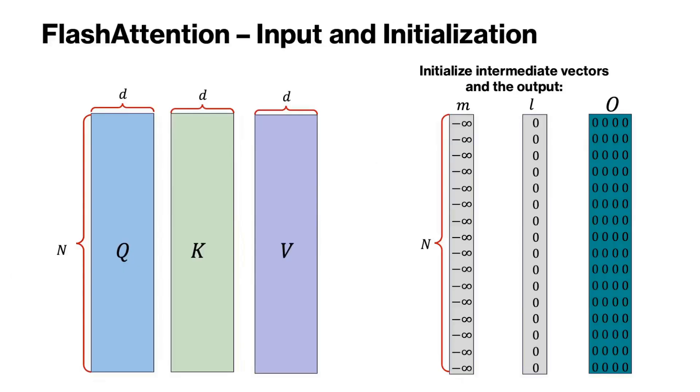With that theoretical reformulation of softmax, now we are ready for flash attention. Given input matrices Q, K, and V, flash attention first initializes two helper vectors m and l, both of size N, as well as initializing the output matrix O, since we are going to update that matrix incrementally.